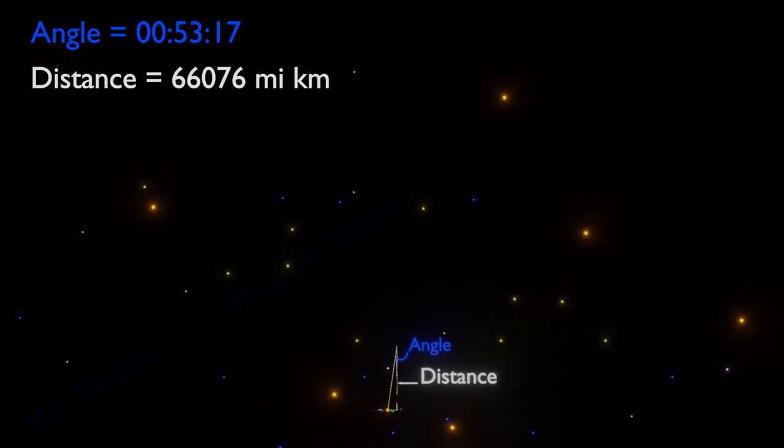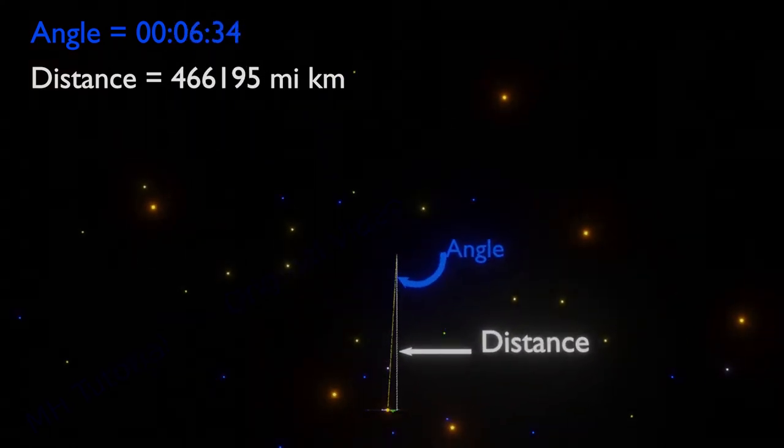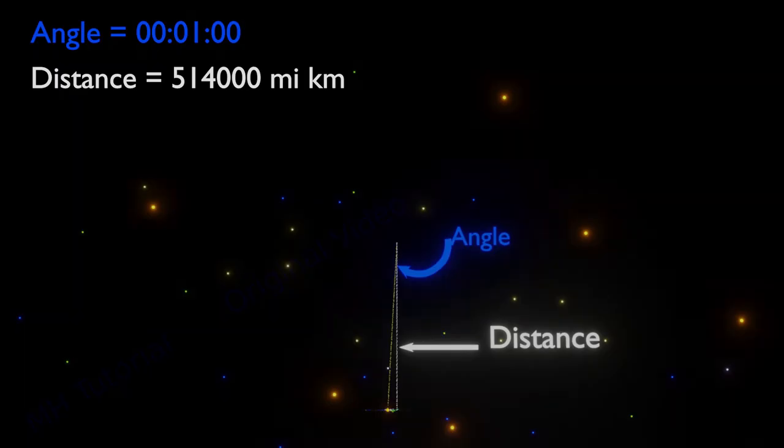Going further again, at about 514 billion kilometers away, the angle becomes only 1 arc minute. So, we observed that to get a smaller angle, the object needs to go to a further distance.